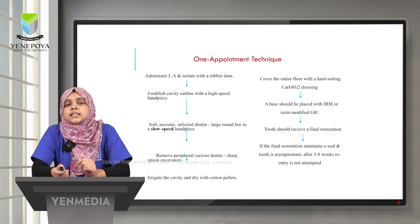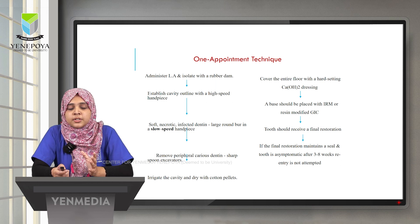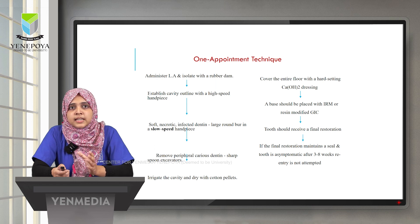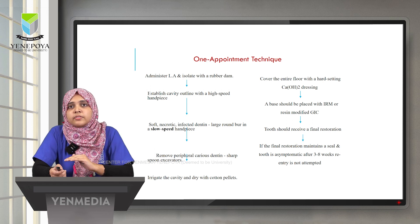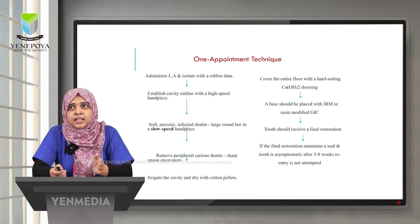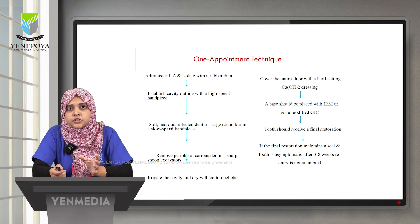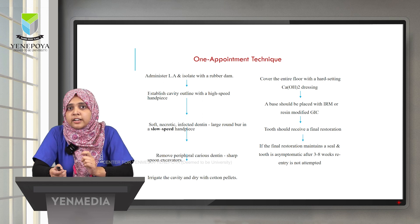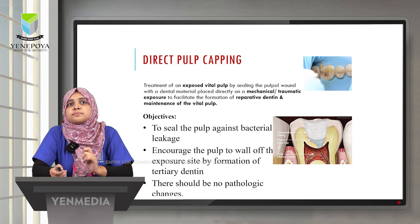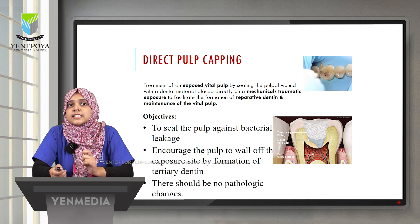In the single-appointment technique, after infected dentine removal, the affected dentine is cleaned and the entire floor is covered with hard-setting calcium hydroxide dressing, followed by a resin liner or resin-modified GIC liner, and then a final restoration. If the patient is asymptomatic after 3 to 8 weeks with a proper seal, no re-entry is attempted.